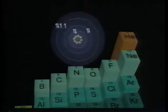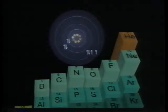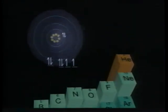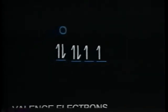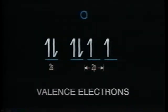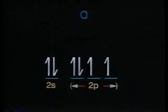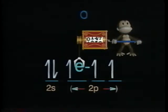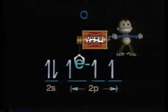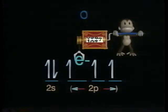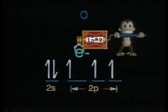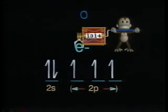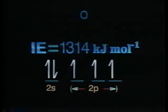The next element, oxygen, has eight protons and eight electrons. The 1s electrons are held very tightly, so there are six valence electrons in an oxygen atom. Like nitrogen, oxygen has two electrons in its 2s orbital, but has four electrons, not three, in the 2p orbitals. The paired last electron is repelled by the other electron in its same orbital. Even though oxygen has an additional proton in its nucleus, this repulsion makes the ionization energy of oxygen lower than that of nitrogen.